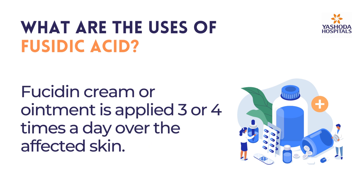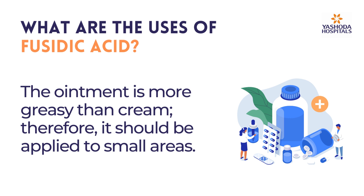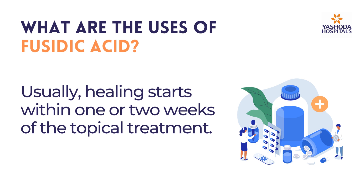Fucidin cream or ointment is applied three or four times a day over the affected skin. The ointment is more greasy than cream, therefore it should be applied to small areas. Usually healing starts within one or two weeks of the topical treatment.